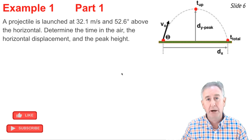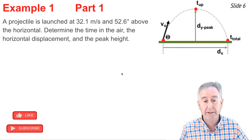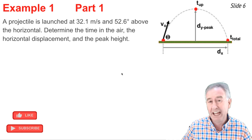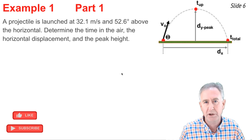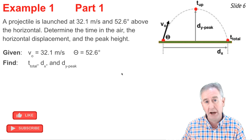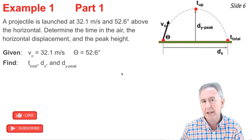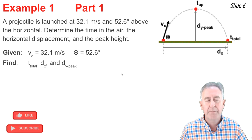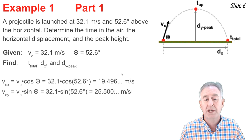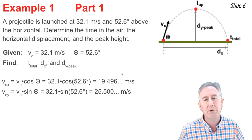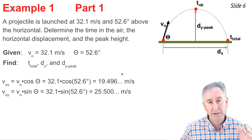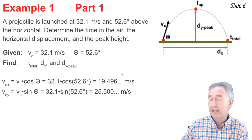Here's our first projectile problem. I'll read it carefully and identify what I know. A projectile is launched at 32.1 meters per second at an angle theta of 52.6 degrees above the horizontal. That gives us VO and theta. We wish to find the time in the air, the horizontal displacement, and the peak height. My first step is to resolve VO and theta into VOx and VOy components. Going 32.1 times cosine of 52.6 gives VOx, and using the sine function gives VOy — the work is shown.